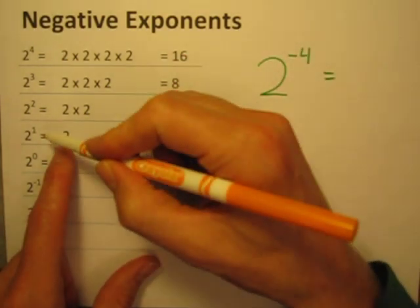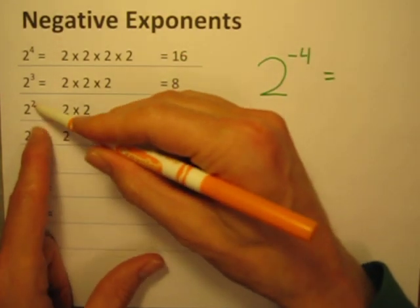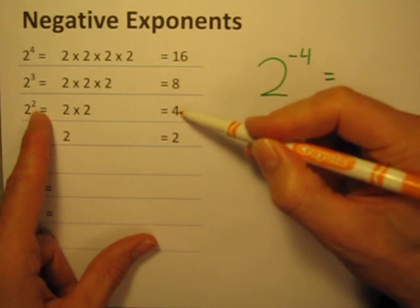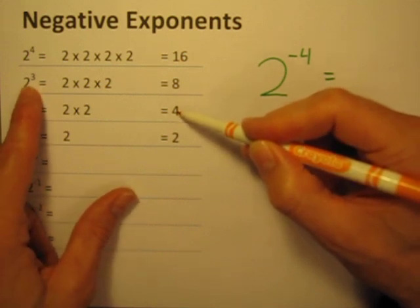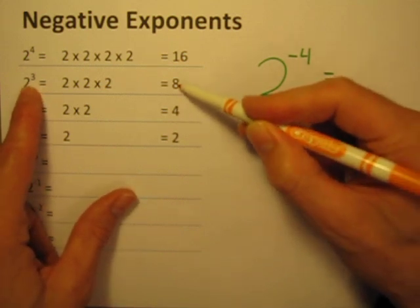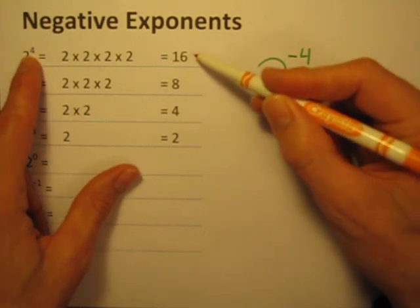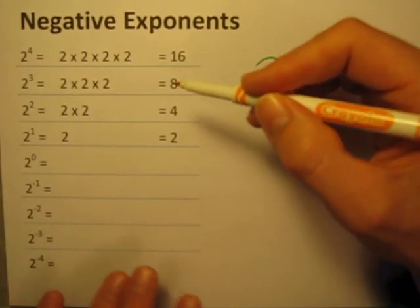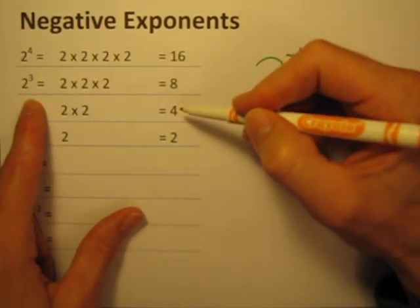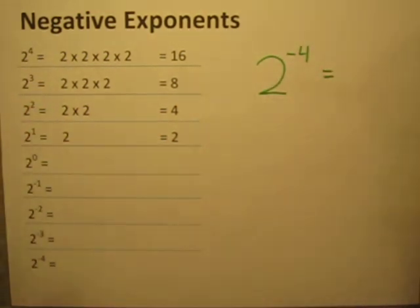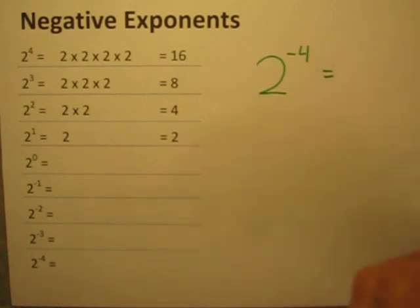Every time we go up one power, we're doubling the number. Go up another power: 4 times 2 is 8. Up another power: 8 times 2 is 16. So every time we go up one power, we're multiplying by 2 — which makes sense, because that's what exponents are for. It's for repeated multiplication.